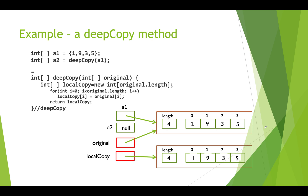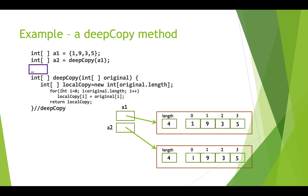The next step is we return localCopy and assign it to a2. We take the address in localCopy and copy it into a2, so now a2 also points at this new array. A2 is a reference variable declared outside of our function. When we return, the reference variables created locally inside the function — localCopy and original — both cease to exist. But the array created on the heap has a reference variable outside the function pointing to it, so it sticks around. Now a1 points to our original array and a2 points to a completely separate copy.